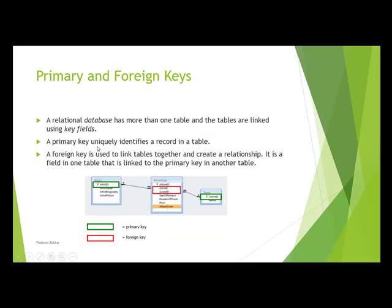A primary key uniquely identifies a record in the table. For example, in the artist table we have artist ID which will uniquely identify each artist. We also have a table called genre with genre ID as the primary key in that table.